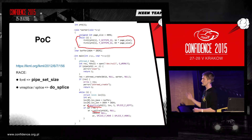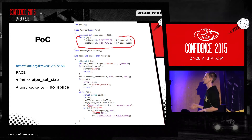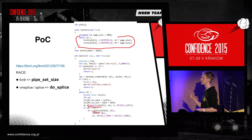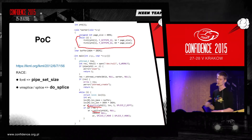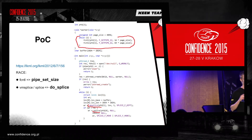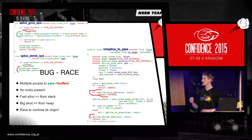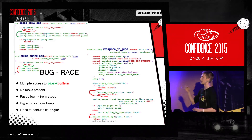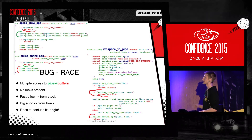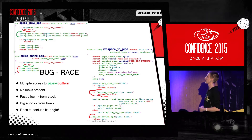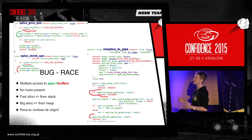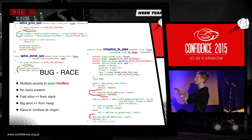Triggering this vulnerability was quite simple — just two threads: one resizing the size of the pipe buffers, and the other one just calls the splice function syscall. And it was about pipe buffers, which is basically the index, the counter of the buffers.